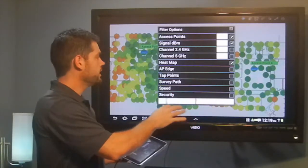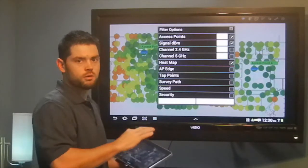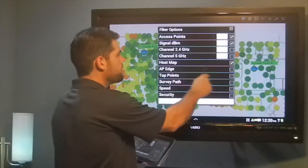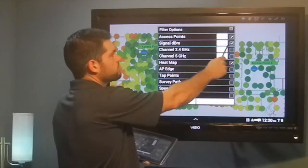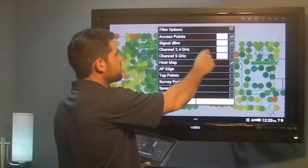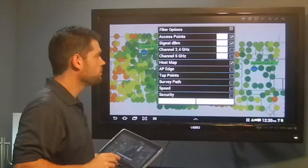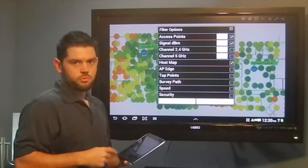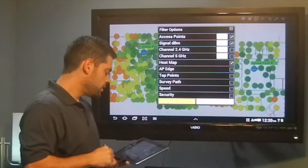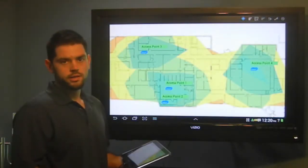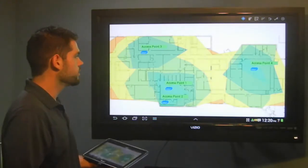So I'll have my heat map enabled. I'll have my signal DBM enabled. And I'll have my access points enabled. And we'll get into these sub filters up here in just a moment. Once I have those three boxes checked and you hit apply and give it a second to render, you're going to get the heat map. And this is what this one looks like.